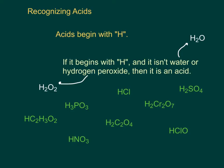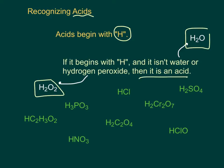The last type of compound we need to learn how to name are acids. Acids begin with H, so anything that begins with H, as long as it isn't water or hydrogen peroxide, is going to be an acid.